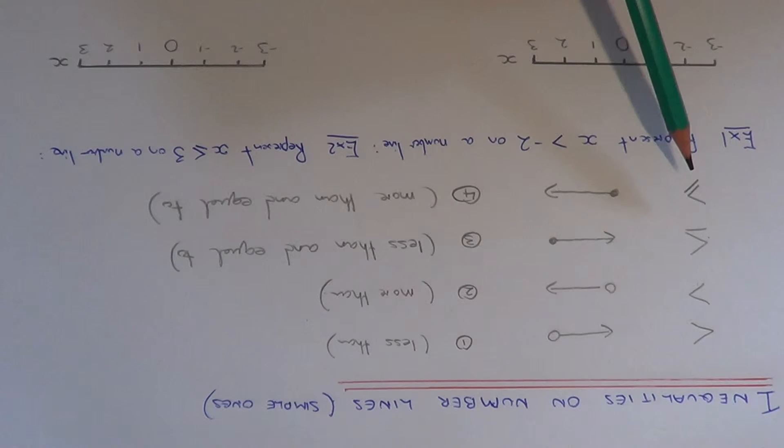And the final inequality sign is more than or equal to. So you colour in the circle and you do an arrow pointing to the right.